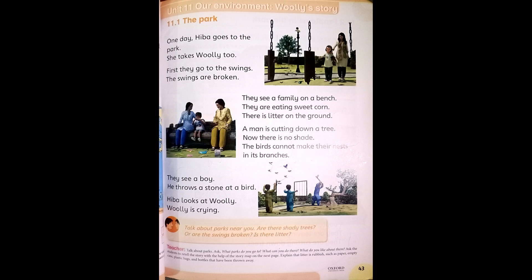In the third picture you can see a man is cutting down a tree. Now there is no shade. When you visit a park or garden you sit down in the shade of trees, but from the picture you can see there is no shade because a man is cutting down the trees.